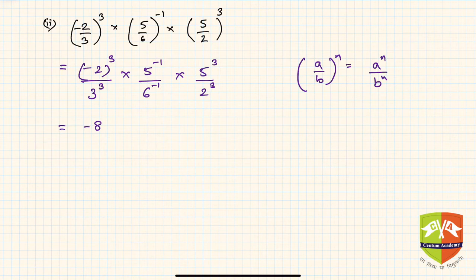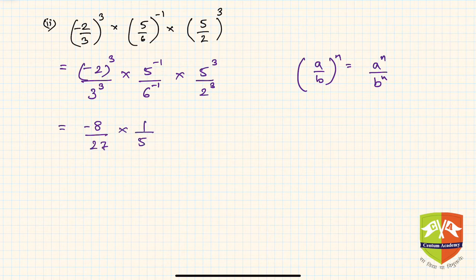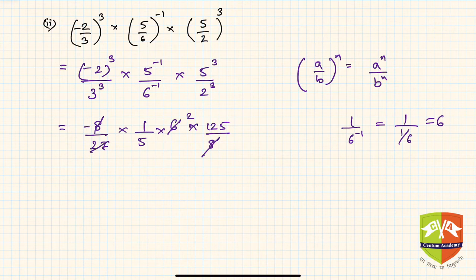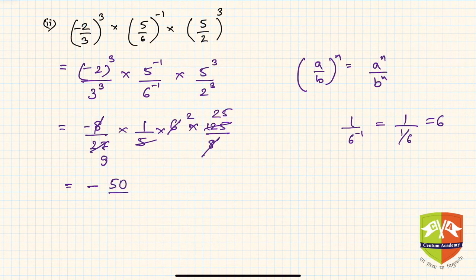Simplifying: (-2)³ = -8, and 3³ = 27. Then 5⁻¹ = 1/5 and 6⁻¹ = 1/6, so 5⁻¹ / 6⁻¹ = (1/5) / (1/6) = 6/5. Also 5³ = 125 and 2³ = 8. The 8s cancel, 27 and 27 cancel, leaving -2 × 25 / 9, which is -50/9.